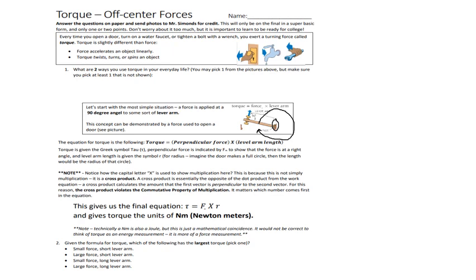Some ways we use torque in our life: a door like I just said, turning on a faucet, a wrench, or turning a steering wheel in a car. Anytime you've got something spinning with an attached pivot point, there's some torque. A basketball player with a pivot foot firmly on the ground and spinning around it — that could be measured as a torque.